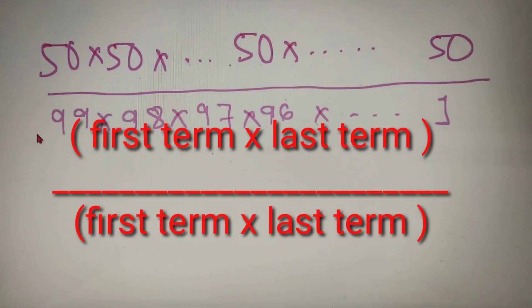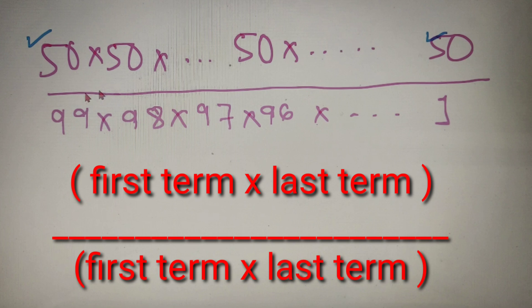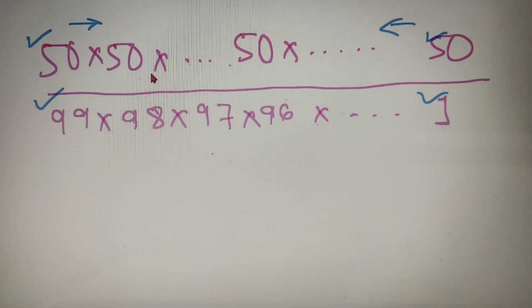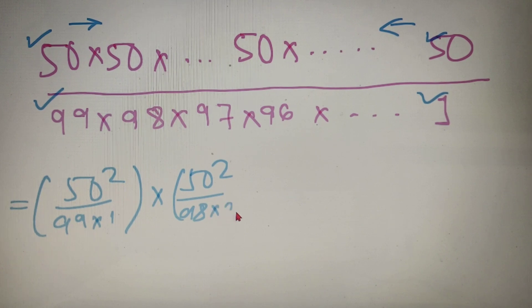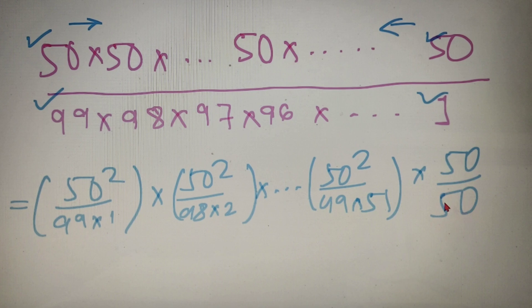Now in the next step what we will do is we will group the first and the last term in both the numerator and denominator as well, and we will move in the right direction from the front and the left direction from the back in both numerator and denominator. So after grouping the terms in the numerator and denominator, we will get 50 square divided by 99 into 1 as our first term, into 50 square divided by 98 into 2, into all the numbers up to 50 square divided by 49 into 51, and the last term that we will get will be 50 divided by 50.